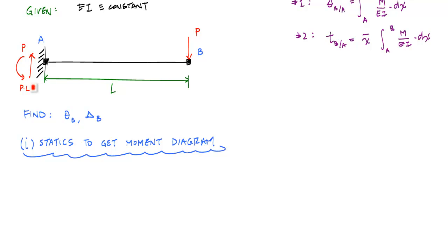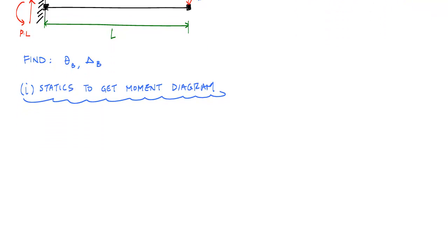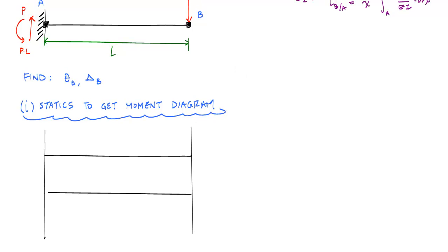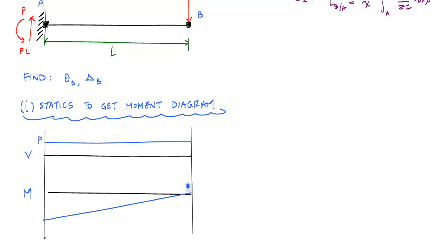If I draw that shear and moment diagram, I know that my moment diagram will look like this. Why not — I'll draw the shear diagram anyway. The shear is constant with a magnitude of P. And the moment diagram, because my shear is constant, is linear. It starts at negative PL over here and goes to zero.